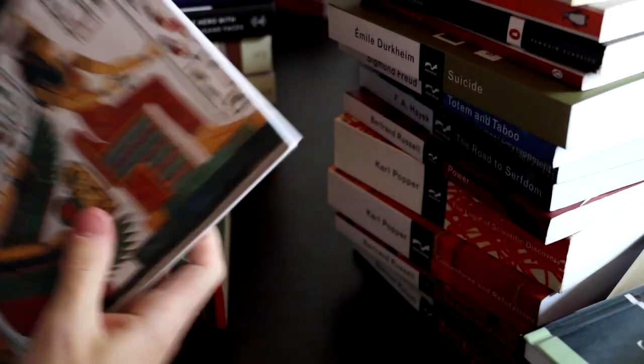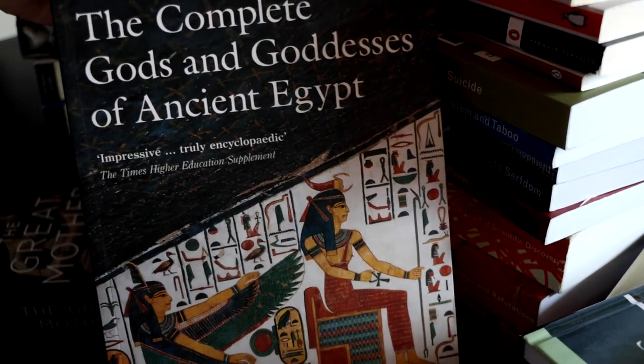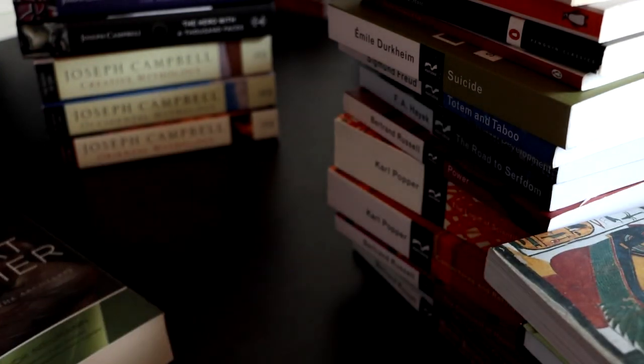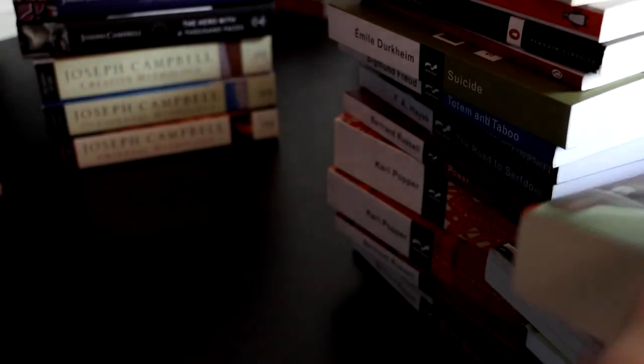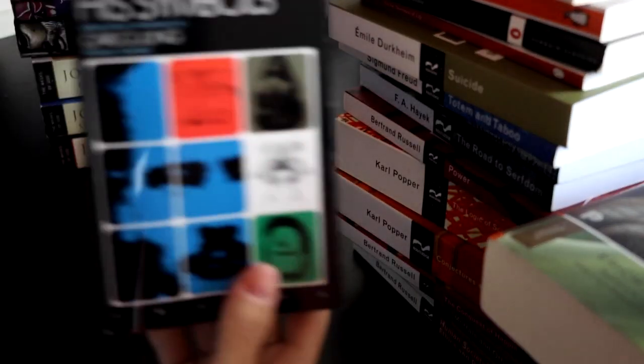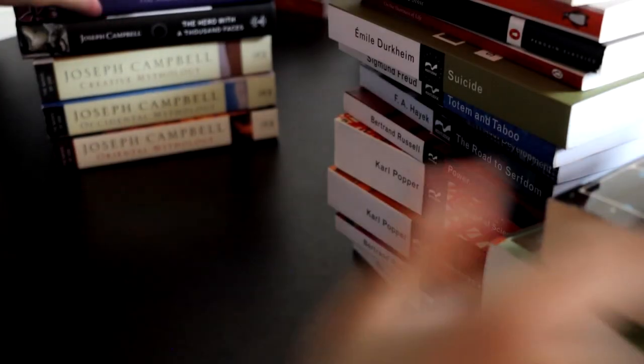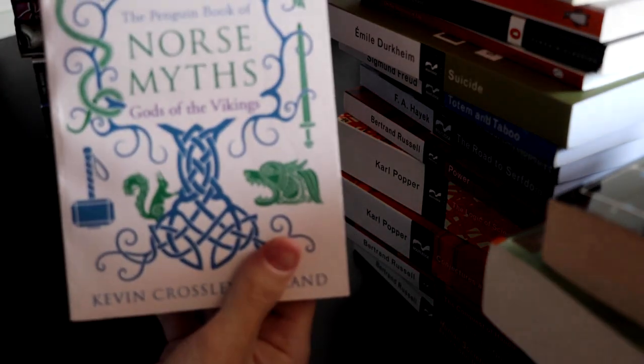Slavic Folklore, a handbook. The Complete Gods and Goddesses of Ancient Egypt. The Great Mother by Erich Neumann. It's the same guy with the Origins and Histories of Consciousness. Man and His Symbols. Norse Myths, Gods and the Vikings.